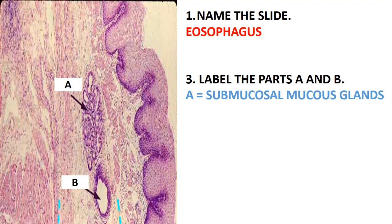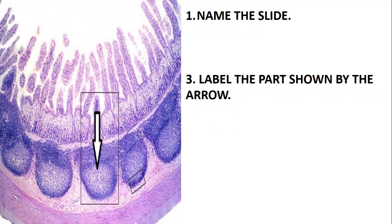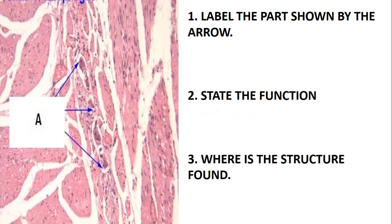Label the parts A and B. Part A is just the submucosal mucous glands, or you can just say the mucous glands. Part B is just the duct. Now, name this next slide. If you look at this slide, you can see those finger-like structures — there are a lot of them — so this slide is just the ileum.